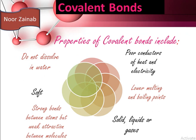Some properties of covalent bonds: they do not dissolve in water, they are soft, and they are poor conductors of heat and electricity. They have lower melting and boiling points. Covalent compounds can exist as solids, liquids, or gases. They have strong bonds between atoms but weak attraction between molecules.